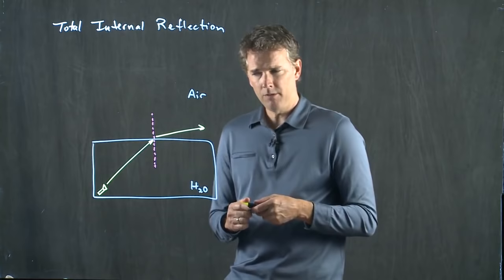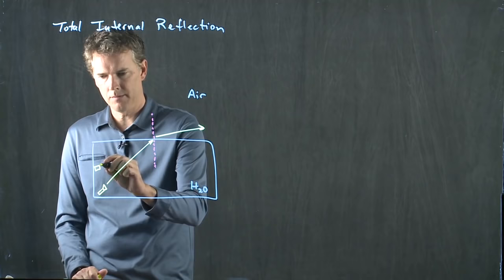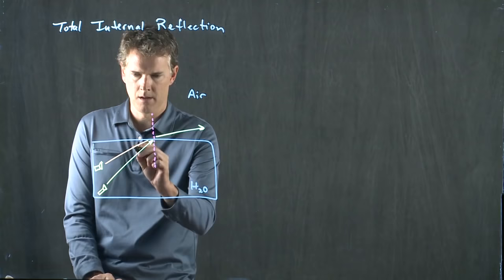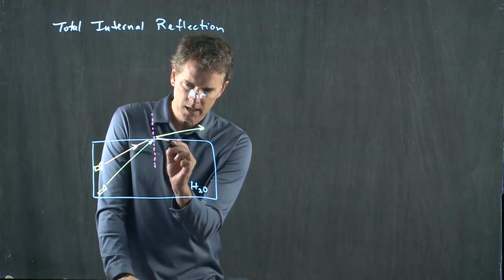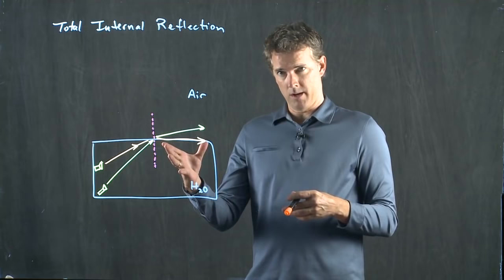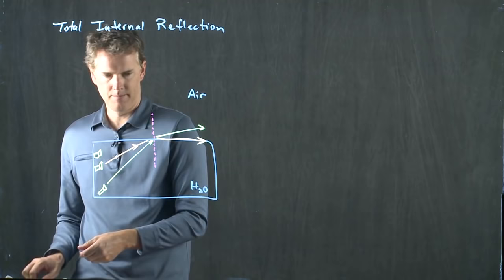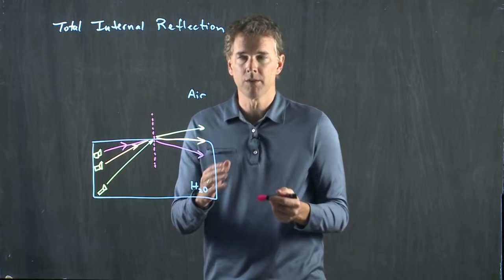But what happens when I start to increase this angle? Let's move the flashlight up to this position and shine that ray at the surface. It again bends away from the normal, and eventually it goes right along the surface. If I keep moving the flashlight up, eventually I get to a position where the light never leaves the water. I can't bend any further away from the normal — and that is what's called total internal reflection.